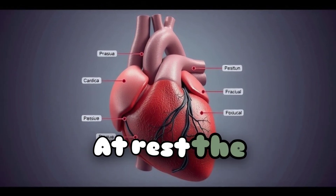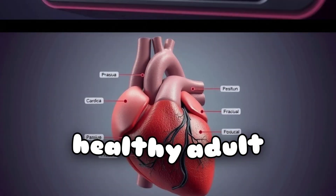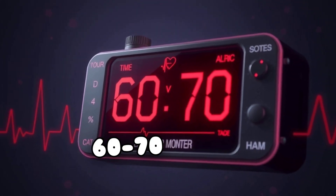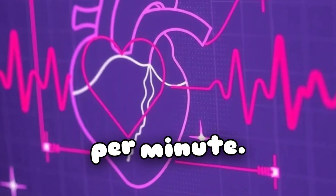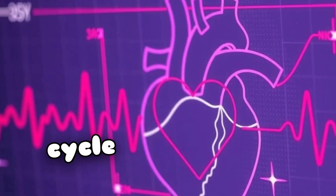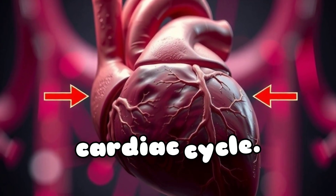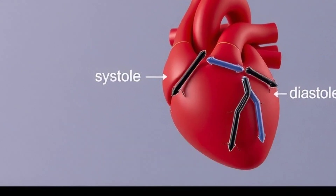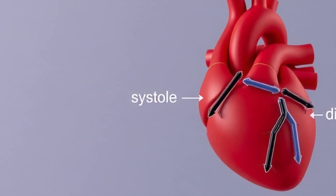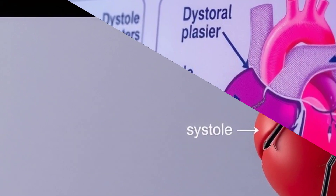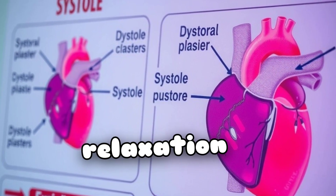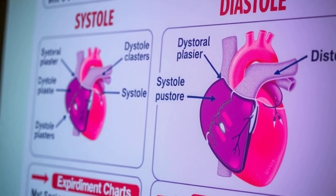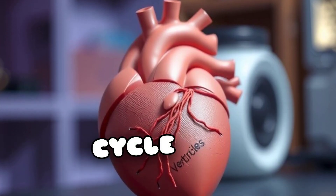The cardiac cycle: at rest, the healthy adult heart is likely to beat at a rate of 60–70 beats per minute. Each heartbeat cycle is known as a cardiac cycle. During this time, the heart will contract and relax. The period of contraction is called systole and relaxation is called diastole.